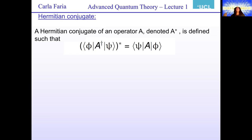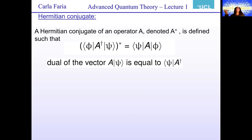We're going to use this and define a Hermitian conjugate. A Hermitian conjugate of an operator A is defined in such a way that this relation must be satisfied: the complex conjugate of the inner product ⟨φ|A|ψ⟩ is equal to ⟨ψ|A†|φ⟩. We can also say that the dual of the vector A|φ⟩ is equal to ⟨ψ|A†.